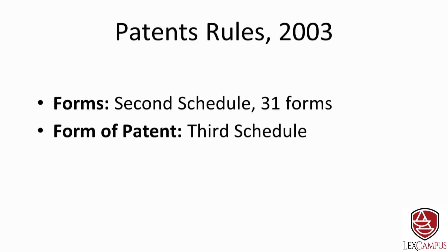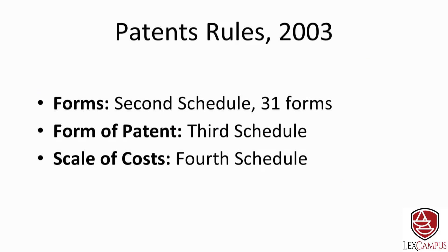The third schedule describes the form of a patent — when a patent is granted, it is granted on this form, which is the certificate of grant. The fourth schedule deals with a scale of costs: in certain proceedings before the patent office, the office has the power to award costs to the succeeding party, to be paid by the losing party.